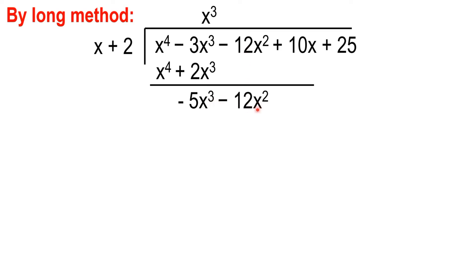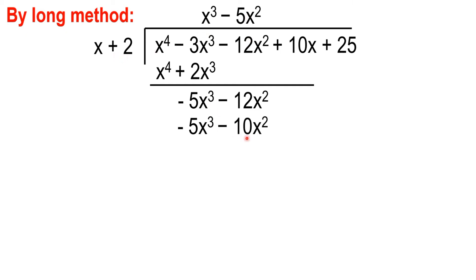Repeat the process. Negative 5x cubed divided by x is negative 5x squared. Then, multiply: negative 5x squared by x is negative 5x cubed. Negative 5x squared multiplied by 2 is negative 10x squared. Subtract — it would be 0. Negative 12 minus negative 10 is negative 2x squared.